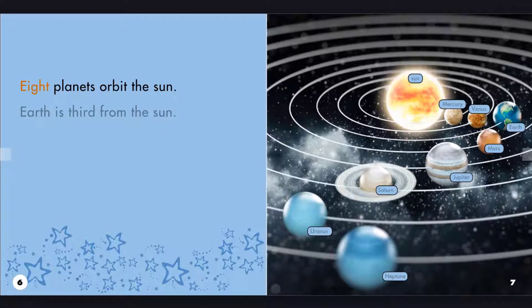Eight planets orbit the sun. Earth is third from the sun.